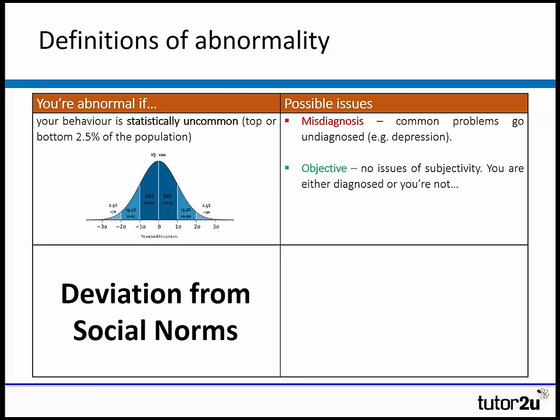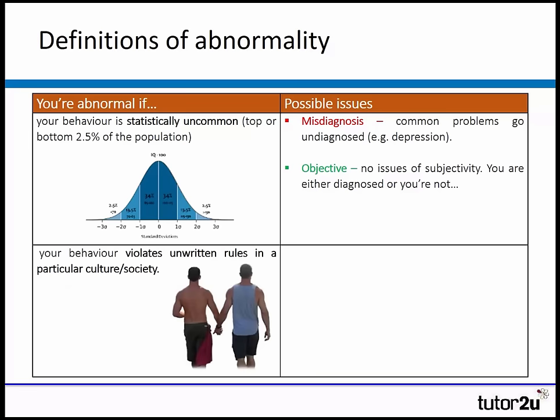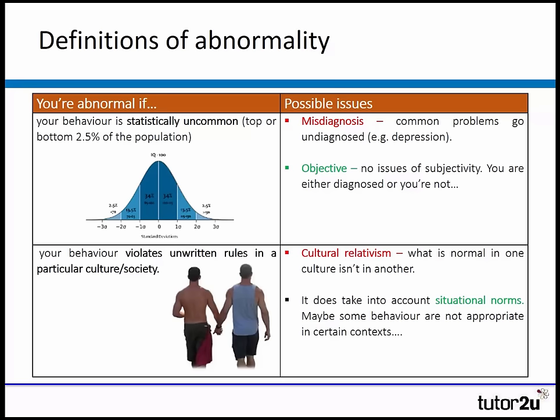The second definition is deviation from social norms. According to this definition, you're abnormal if your behaviour violates unwritten rules in a particular culture or society.